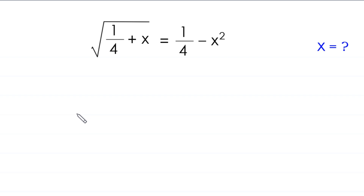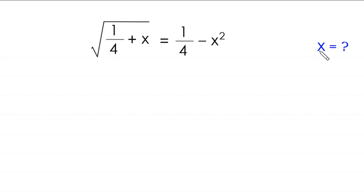Hello everyone, you are welcome to how to solve this very nice radical equation. The equation is: square root of (1/4 + x) is equal to 1/4 minus x squared. Our job is to find all possible values of x. So let us start.